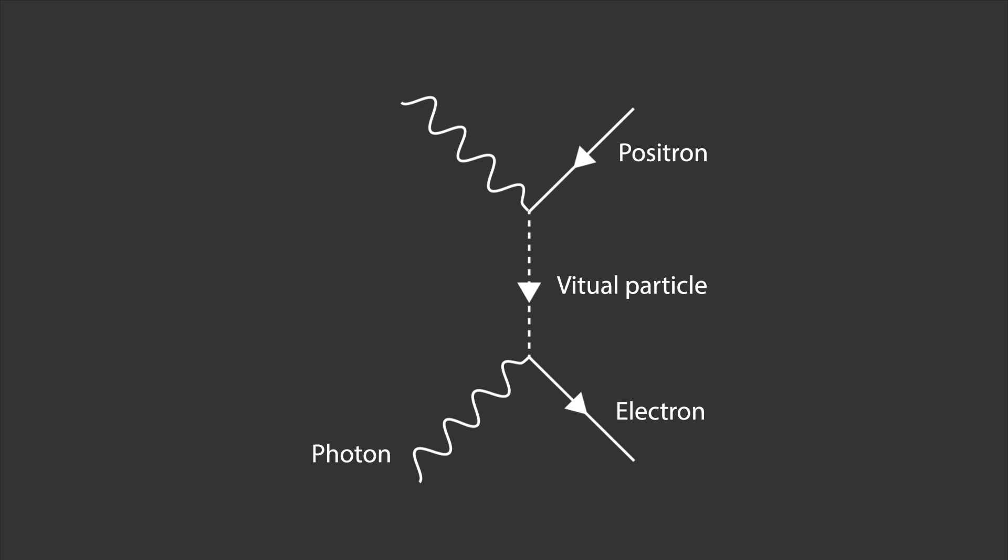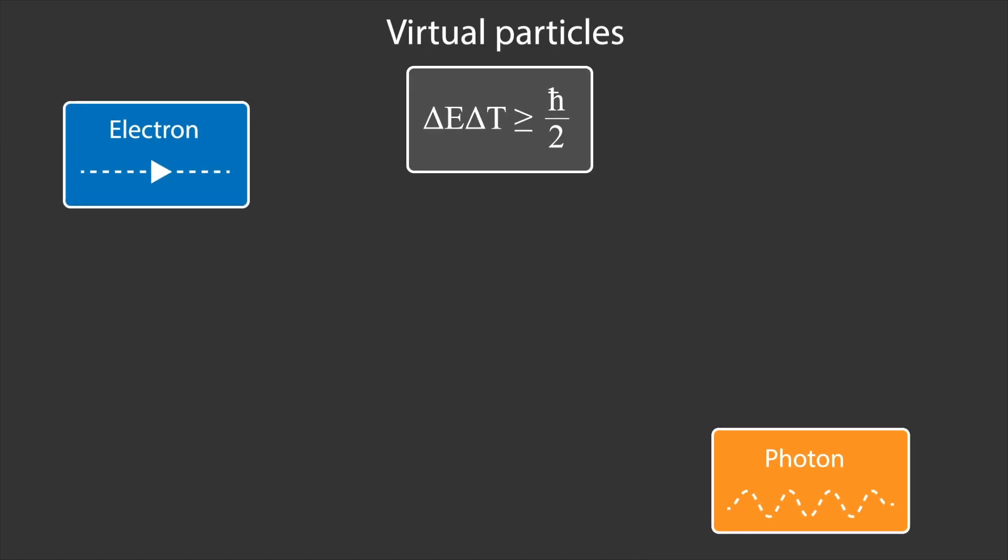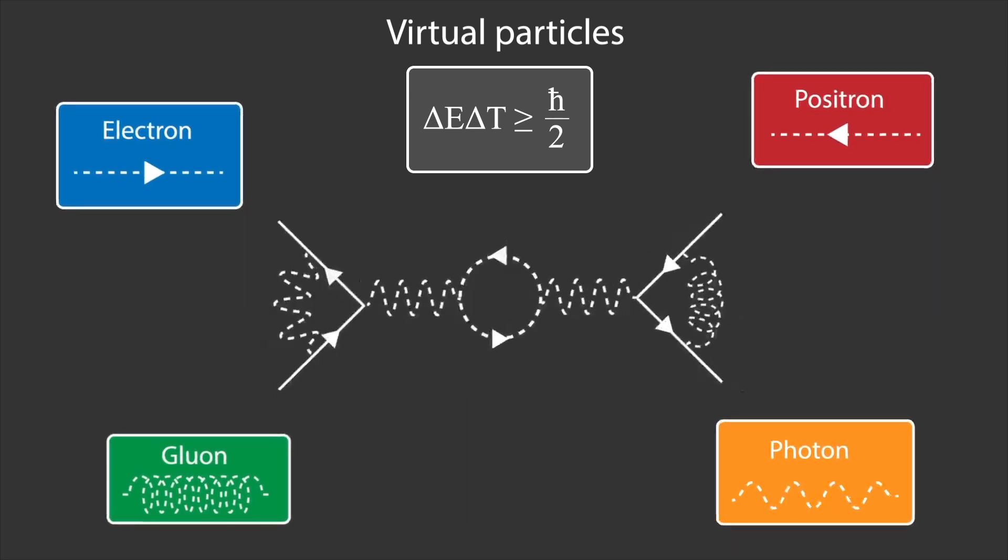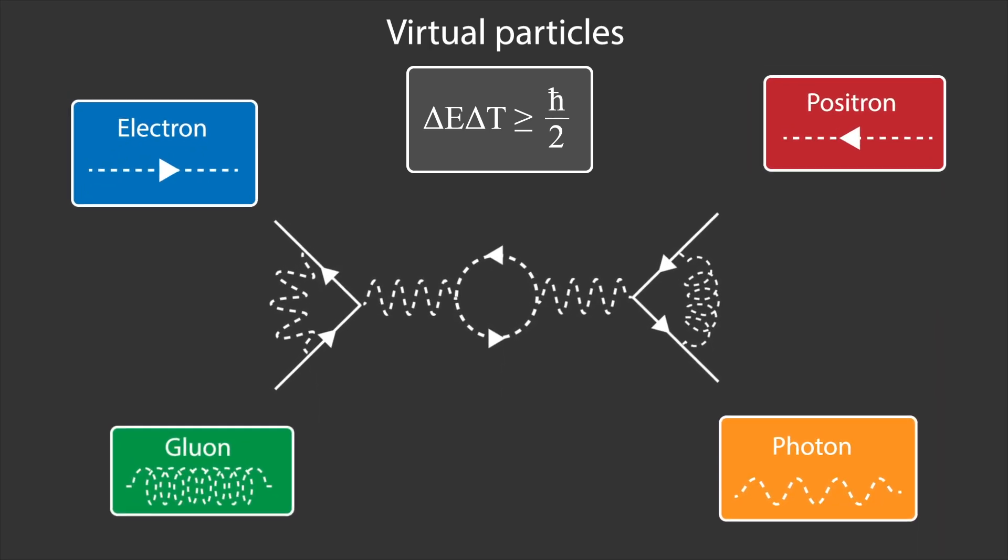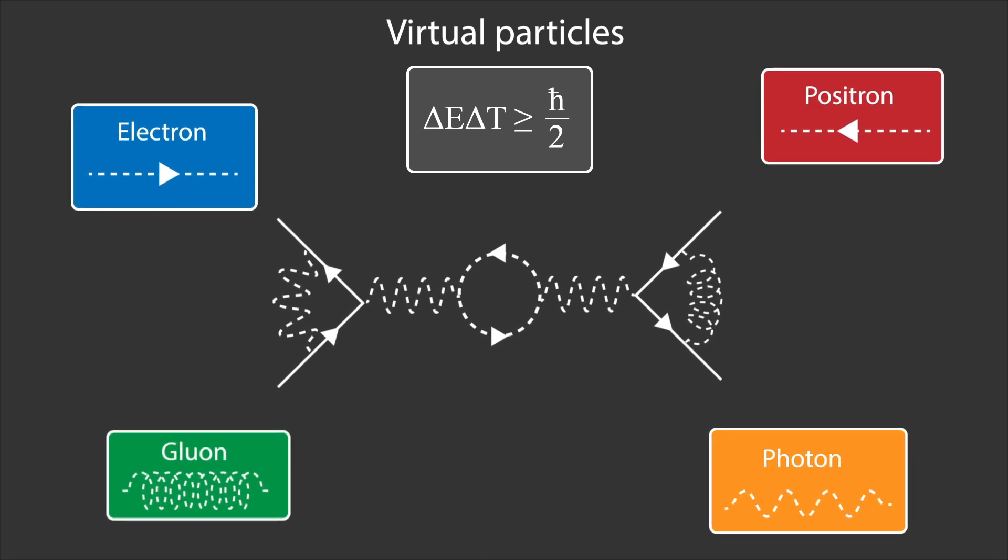Now, a virtual particle is a particle that resembles a real particle, but whose existence is limited by the uncertainty principle. This type of particle is commonly used to explain how particles can interact in particle physics.